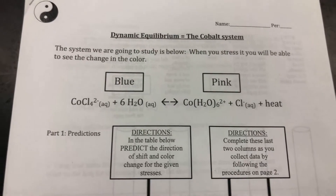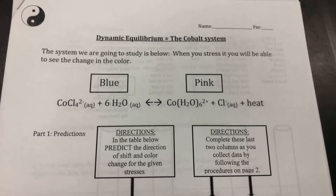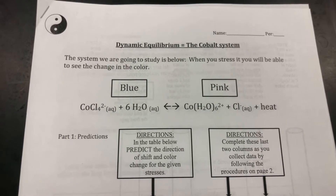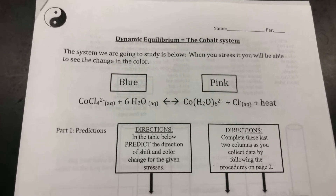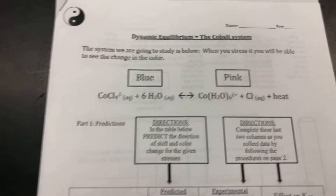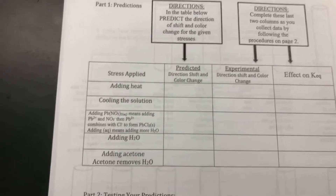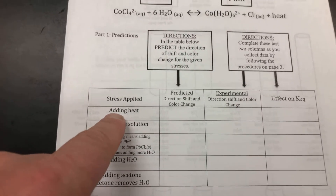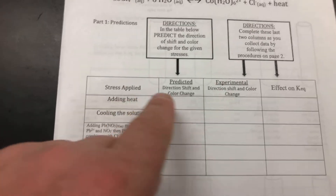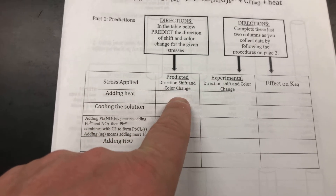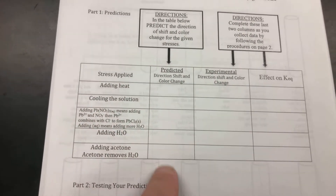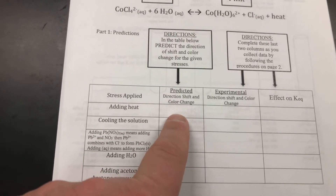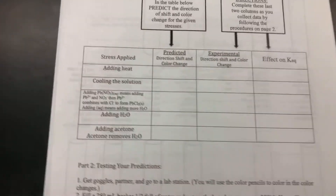Take a second and look at that reaction. Our first step is to make predictions on which way it will shift and the color. What would adding heat do? What way do you think it would shift and the color? Do an arrow and a color — pink or blue. Pause video now.